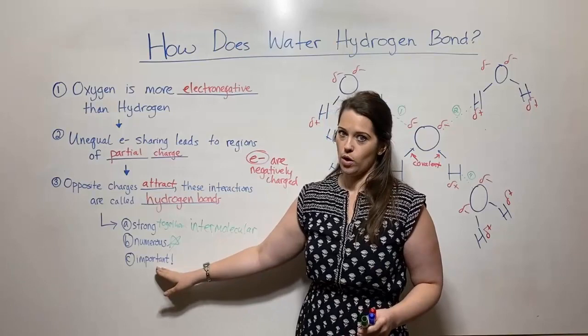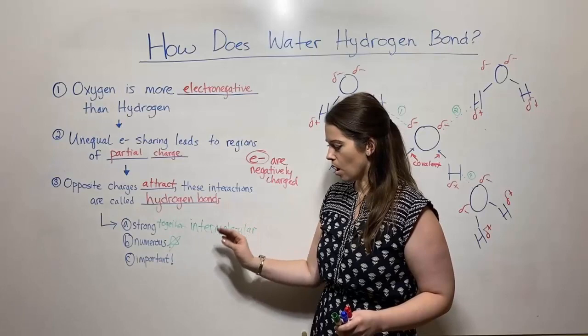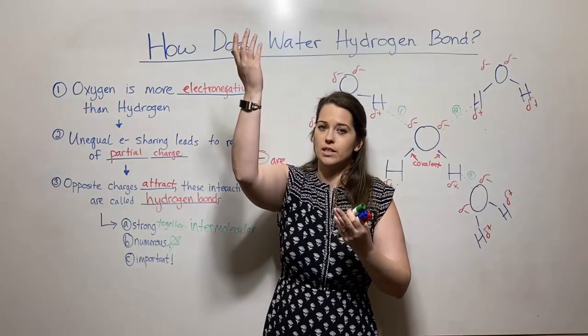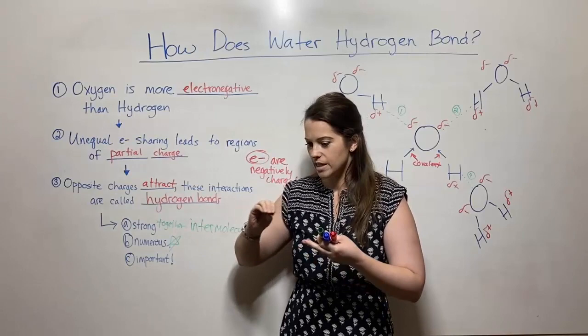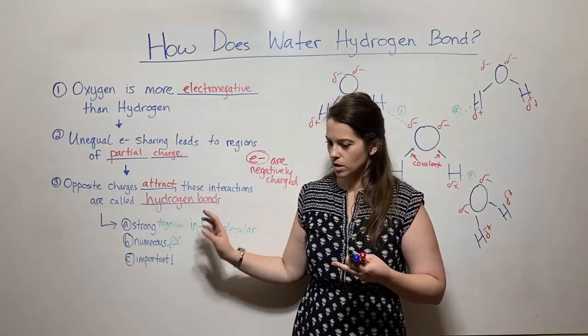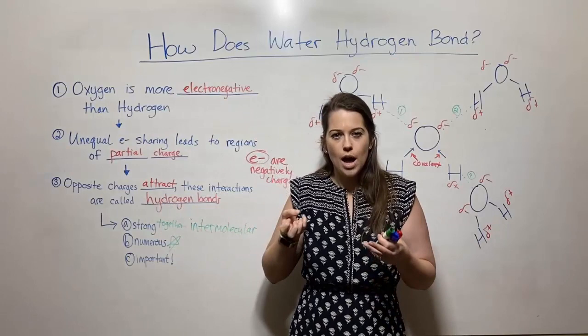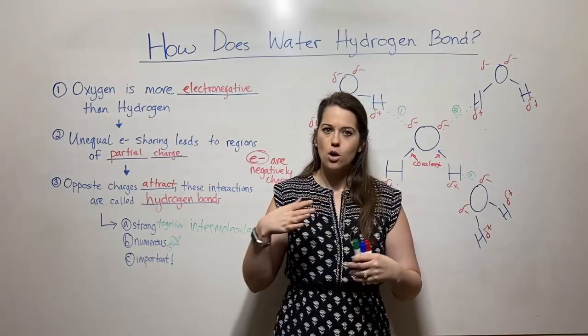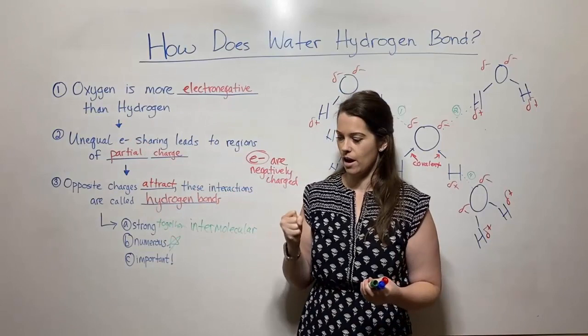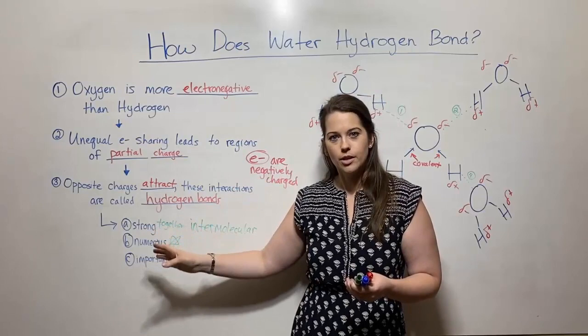These hydrogen bonds allow water to do so many things. They allow water to be cohesive and adhesive, which is how water can move up from the roots, through the stems, and up to the leaves of a plant or tree. That cohesive property also gives us surface tension, so that something can float on water or a little insect can walk across it. Hydrogen bonds also enable water to have such a high specific heat — it can absorb a lot of energy from the sun during the day and release it at night, giving coastal and lake areas those mild, enjoyable temperatures. Water enables life, and it's because of these hydrogen bonds.